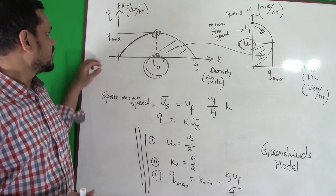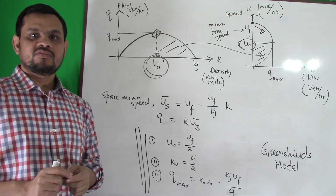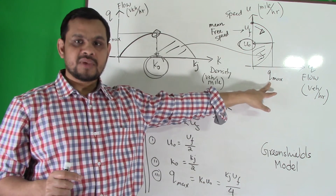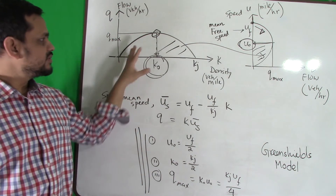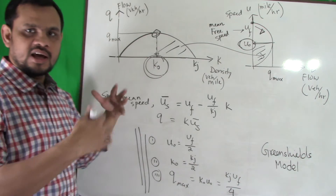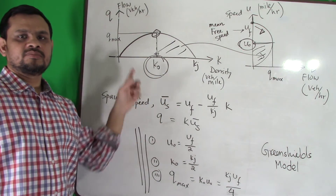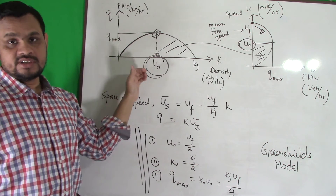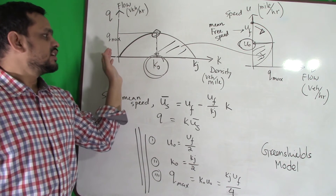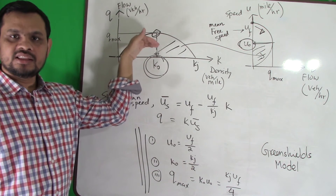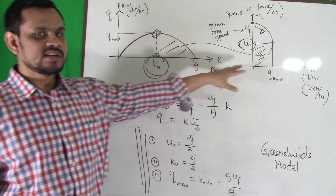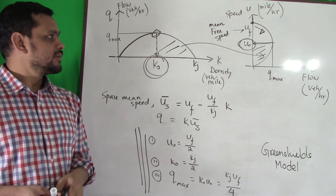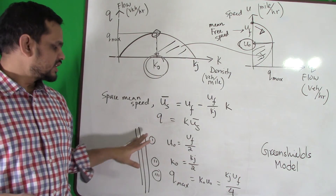To recap: k-naught is the optimum density for which flow is maximum. u-naught is the optimum speed when flow is maximum. In some FE exam questions, they may ask: which statement is correct? Flow does not always increase or always decrease with density — the correct answer is: flow increases with density, reaches a peak, and then decreases. Hopefully you understood density, flow, space mean speed, and how to use the Greenshield model.